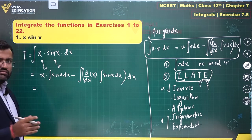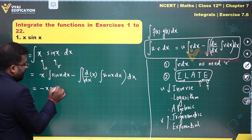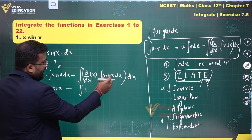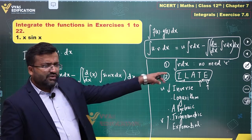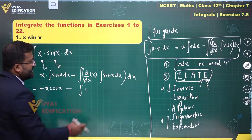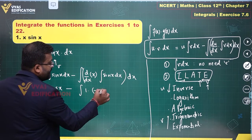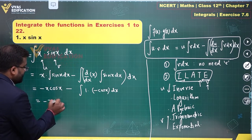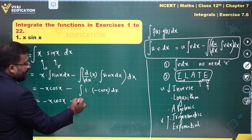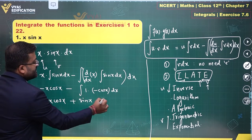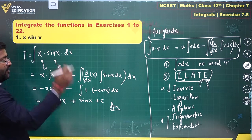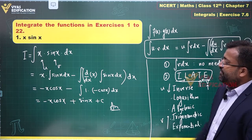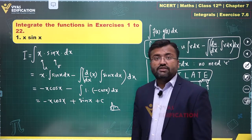Keeping x constant, integral of sin(x) dx is −cos(x). So this becomes x·(−cos x) minus the integral of: derivative of x (which is 1) times integral of sin(x) (which is −cos x) dx. So we get −x·cos(x) minus integral of (−cos x) dx. The integral of cos x is sin x, so this becomes −x·cos(x) + sin(x) + C.